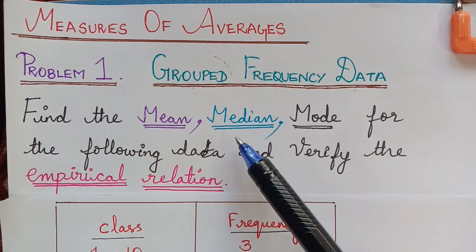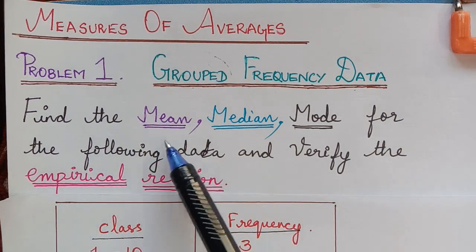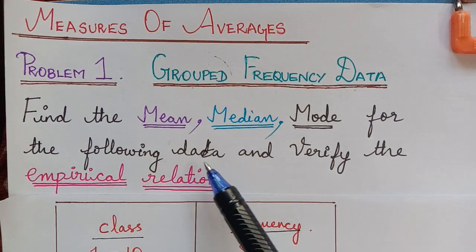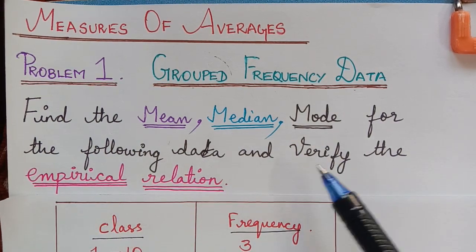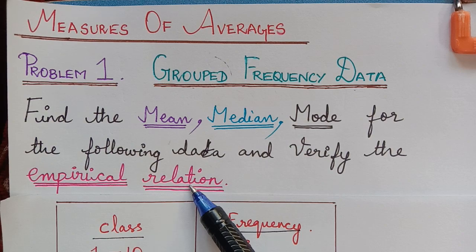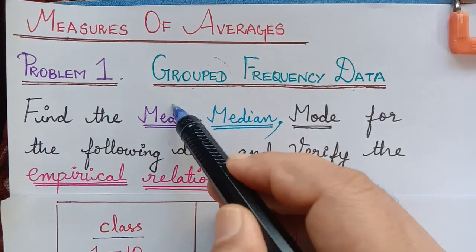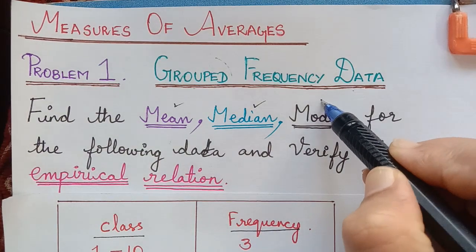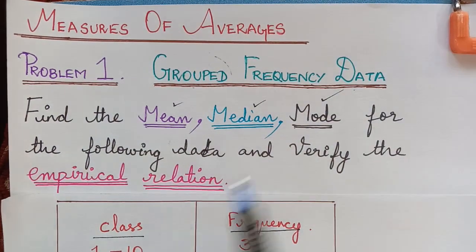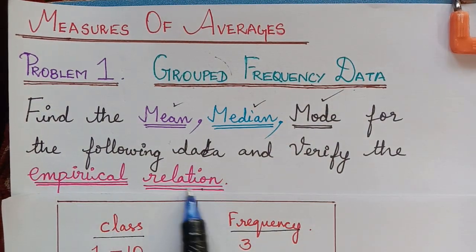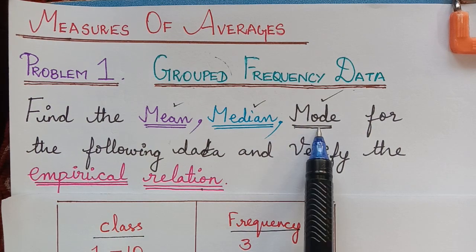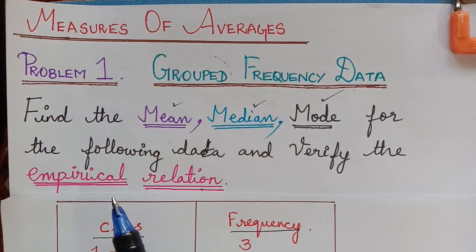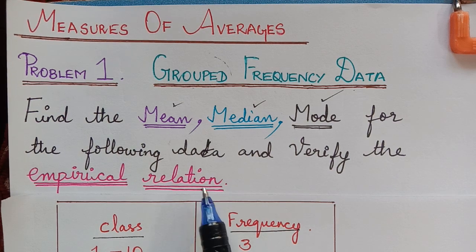The question is: find the mean, median and mode for the following data and verify the empirical relation. So first we have to find mean, then median, then mode, and we have the empirical relation where we have to substitute mean, median, mode and verify whether the given data satisfies the empirical relation or not.